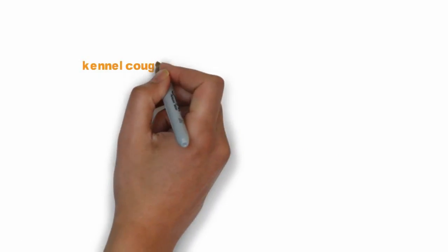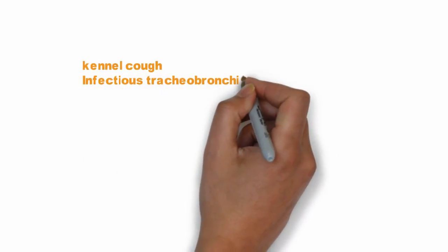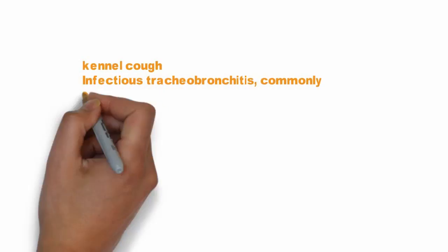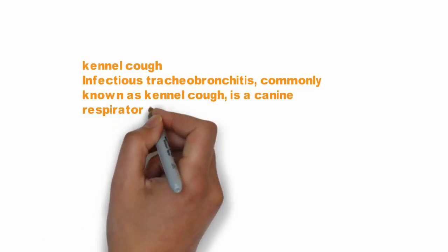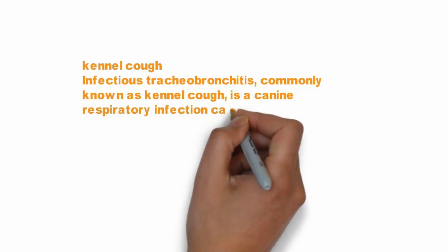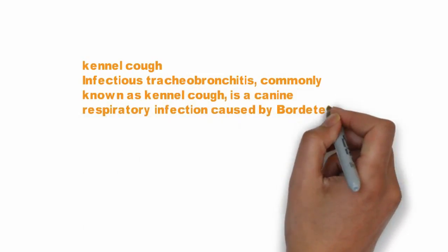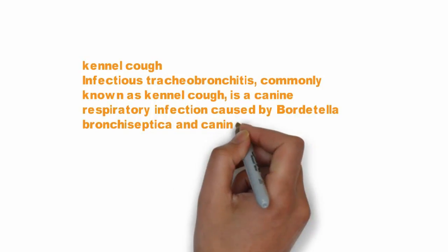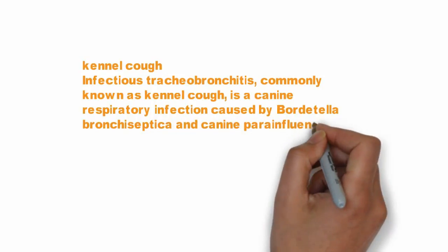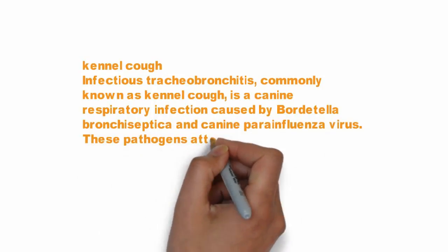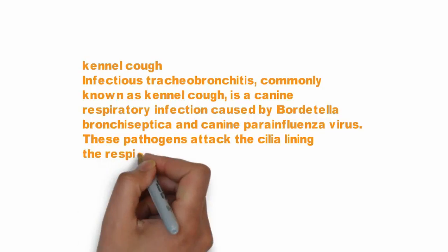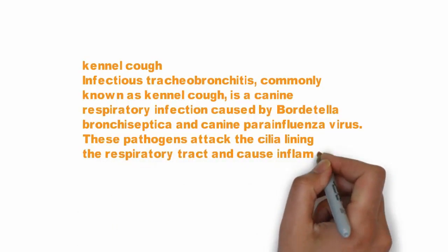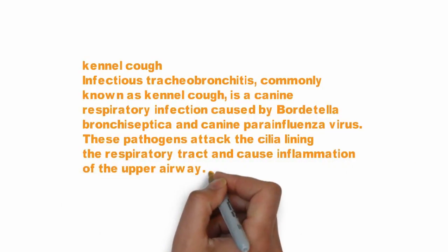7. Kennel Cough. Infectious tracheobronchitis, commonly known as kennel cough, is a canine respiratory infection caused by Bordetella bronchiseptica and canine parainfluenza virus. These pathogens attack the cilia lining the respiratory tract and cause inflammation of the upper airway. Kennel cough is very contagious.